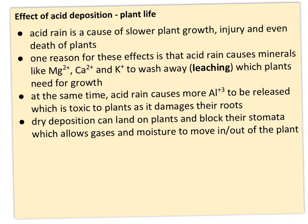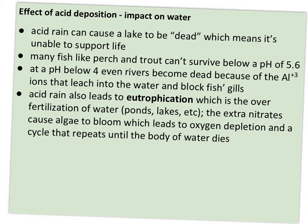As for plant life, the big effect is that acid rain slows plant growth or even causes death. Acid rain causes minerals like magnesium, calcium, and potassium ions to wash away — those are the beneficial ions for plant growth. This process is called leaching. At the same time, it causes more aluminum ions to be released, which are toxic to plants and damage their roots. A third issue is that dry deposition can land on plants and block their stomata — the small pores that allow gases and moisture to move in and out.